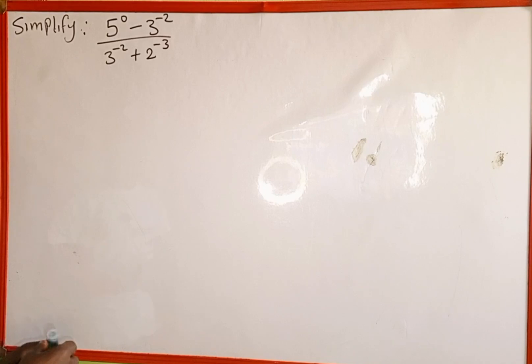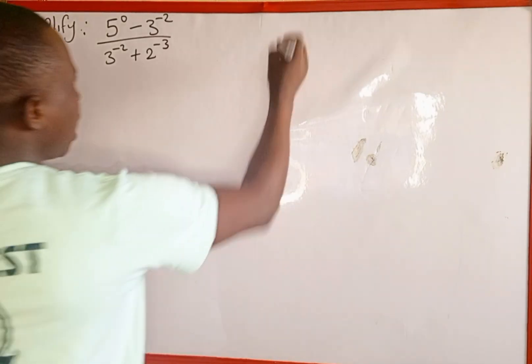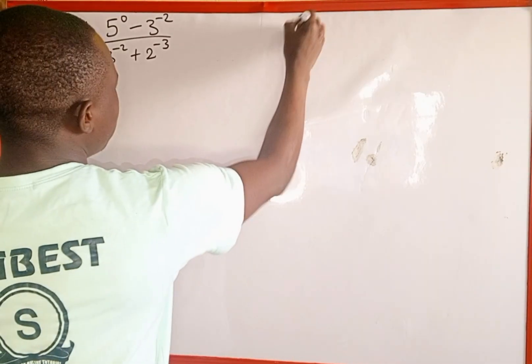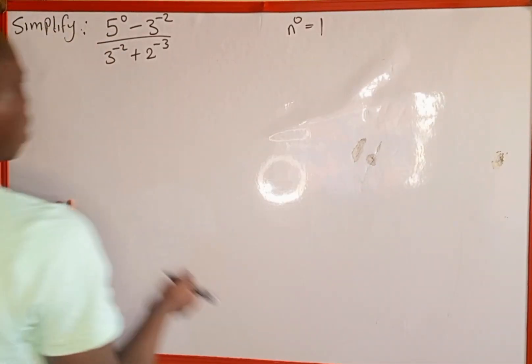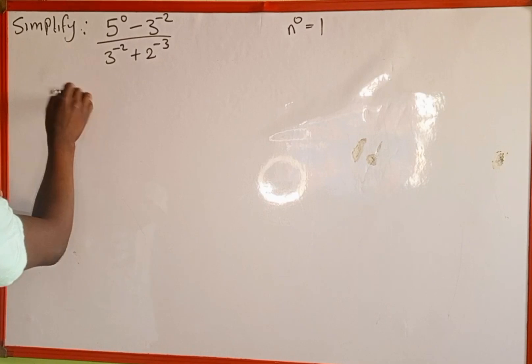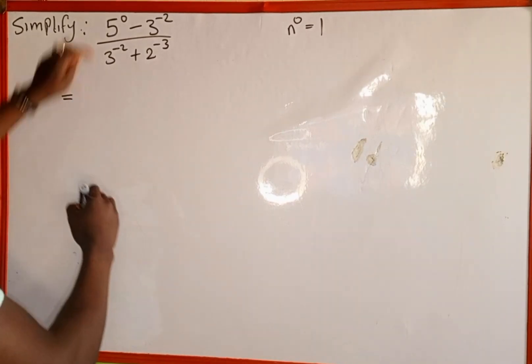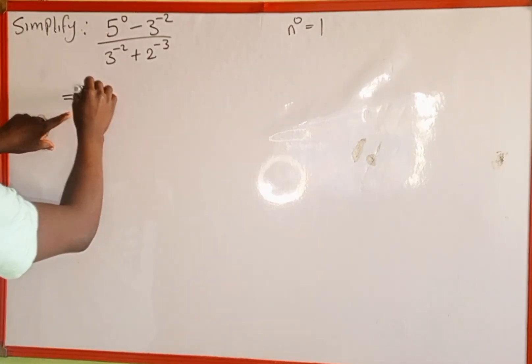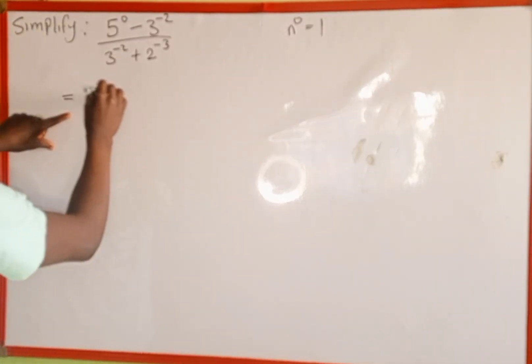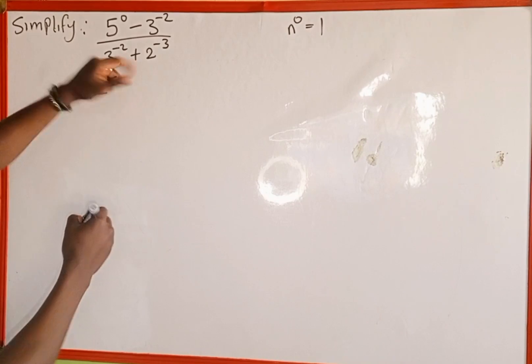The first thing we're going to recall is that any number raised to the power of 0 is the same as 1. So now to simplify this, 5 to the power of 0 is the same as 1, then minus.